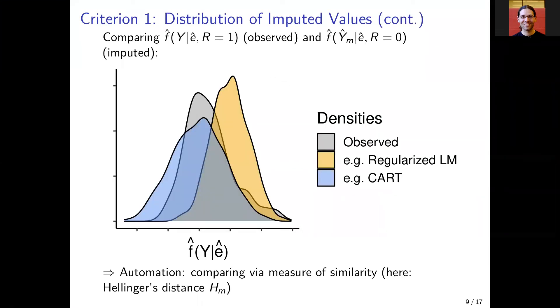So after estimating these densities, we just compare the observed one and the potentially imputed ones. Looking at the picture in gray, we see an example of an observed distribution.